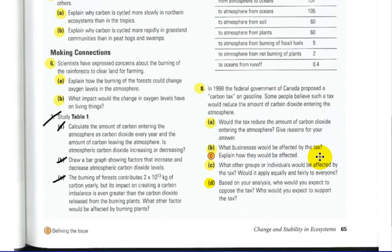B, what businesses would be affected if we had this tax added to gasoline? Explain how they would be affected. C, who else do you think could be affected by this tax? And would it be equally and fairly to everyone? And then D, based on your analysis, who would you expect to oppose the tax? Who would you expect to support the tax?